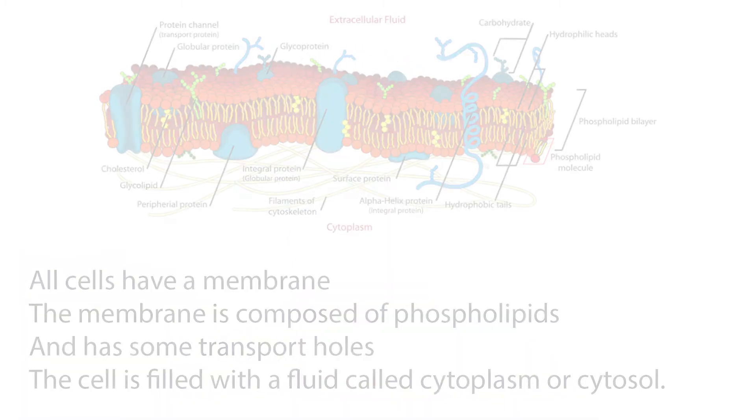Hi and welcome to this video on cells and what goes on in their nuclei. The cell is the basic organizational unit of all living things. There are many types of different cells, but cells are unique to each type of organism.